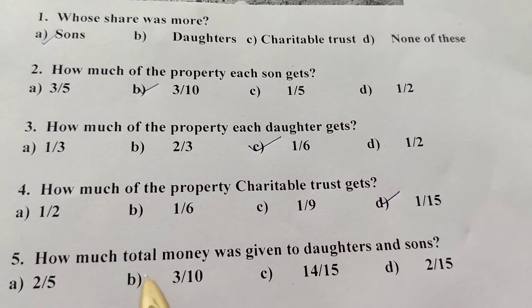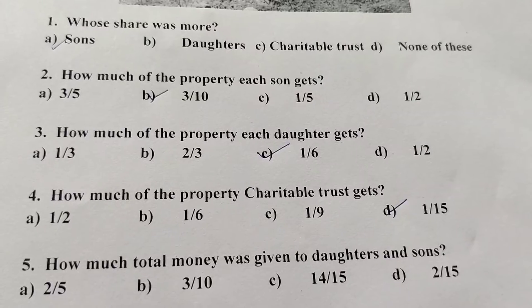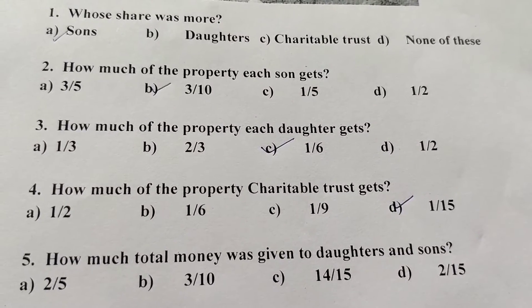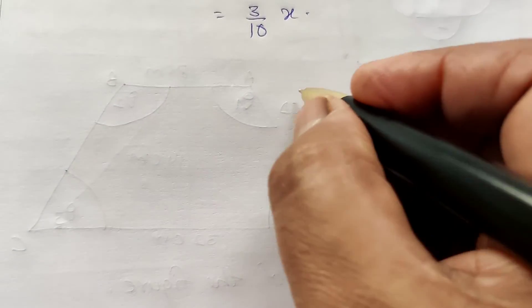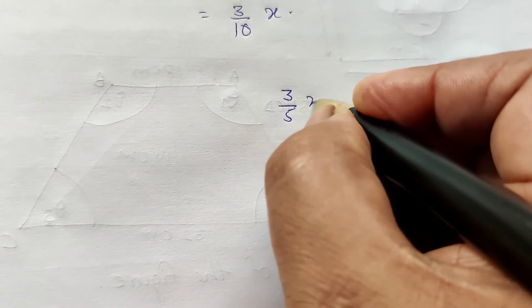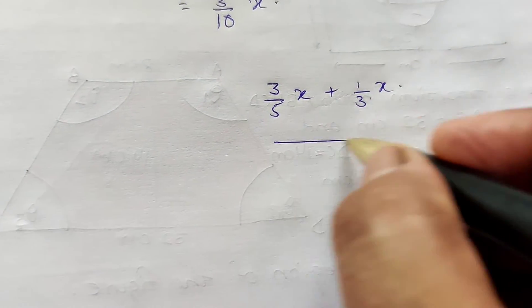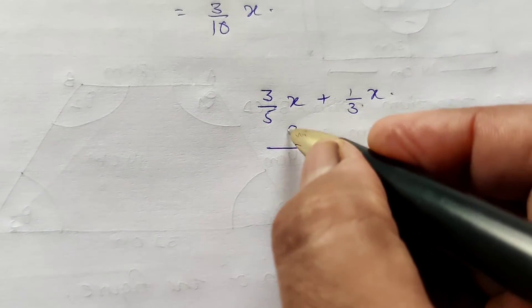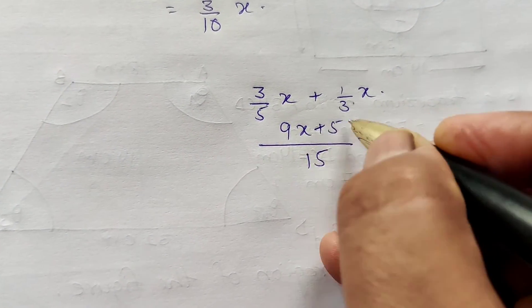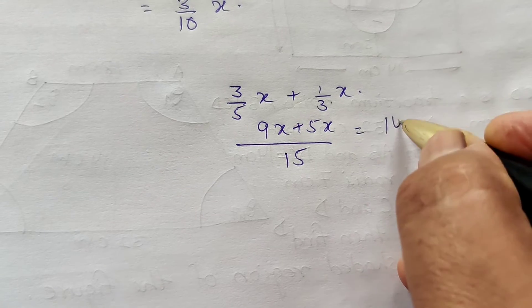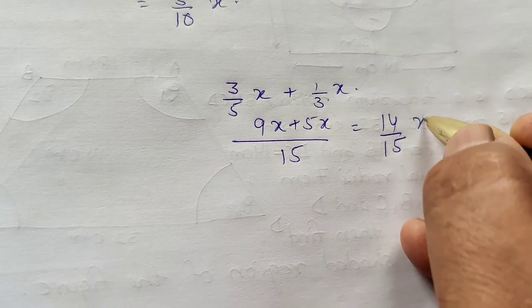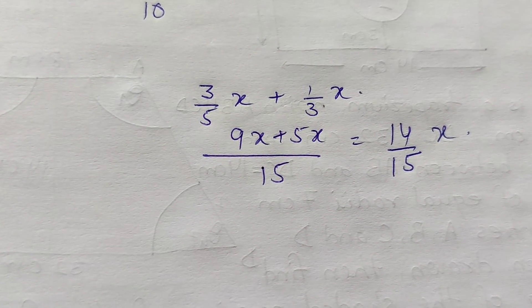And the last question: How much total money was given to the daughters and sons? Total of daughter and sons is 3/5X plus 1/3X. It is equal to 15. 9X plus 5X. The 14/15 part of the property. Total sons and daughters get.